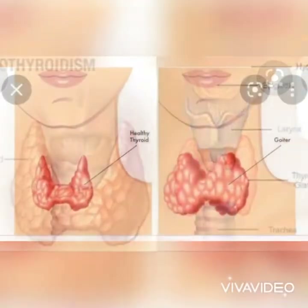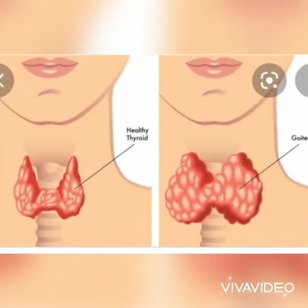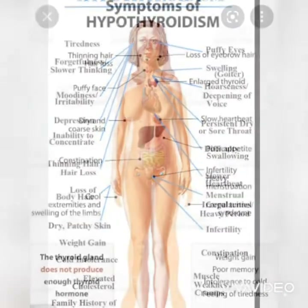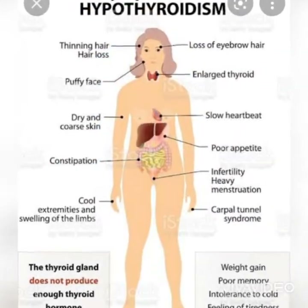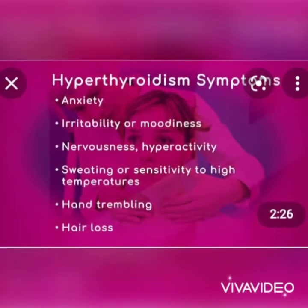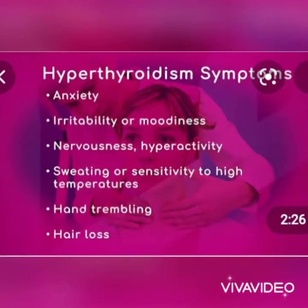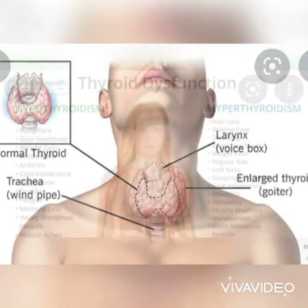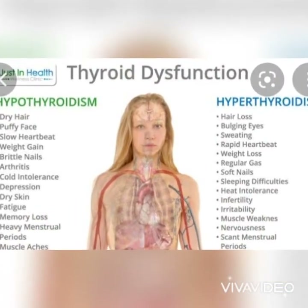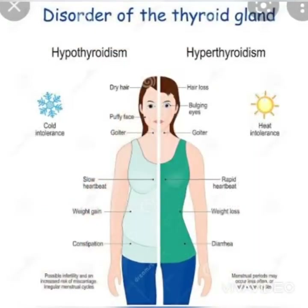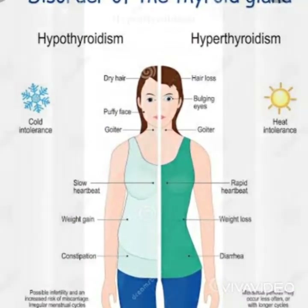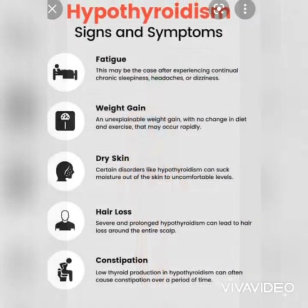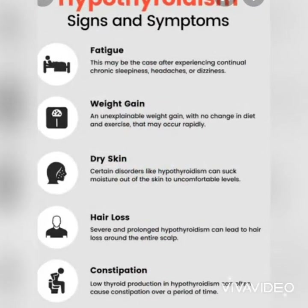Symptoms of hyperthyroidism include unintentional weight loss, increased appetite, rapid heart beat — called tachycardia — which is commonly more than 100 beats per minute, irregular heart beat called arrhythmia, pounding of your heart called palpitation, nervousness, anxiety, irritability, tremor (usually fine trembling in your hands and fingers), sweating, changes in menstruation pattern, increased sensitivity to heat, and changes in bowel pattern.